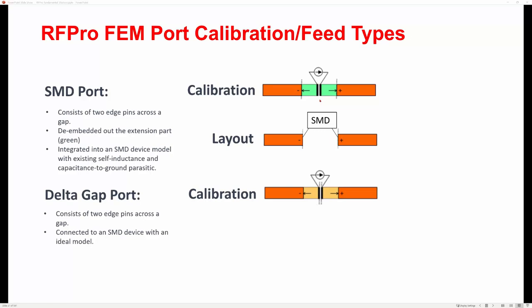The model also adds the mutual coupling of these added parts to the nearby environment. Because of this calibration process, delta-gap is for an ideal model without de-embedding the extension, while SMD is ideally suited for models that already include self-inductance and capacitance to ground.